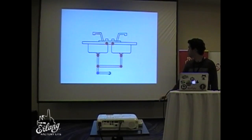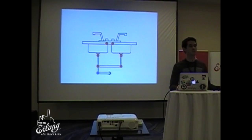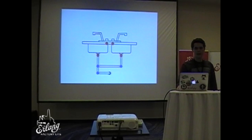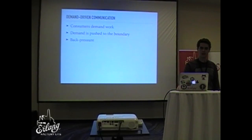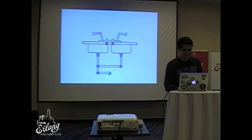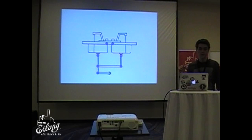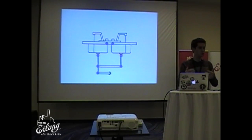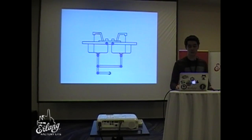As soon as the first stage realizes it can handle more load, it lets the previous stage know — this message propagates up through the system to the boundary. After you get some load at the initial boundary of the system, the important thing is to shut it off so the producers will not keep putting load into the system. This way you can actually work without being overloaded.